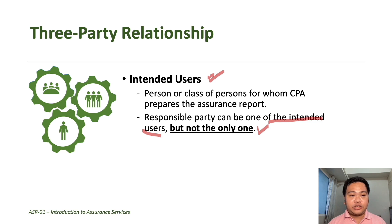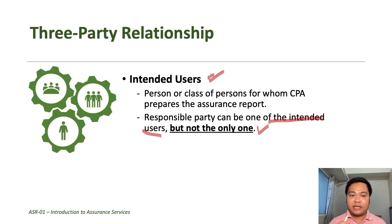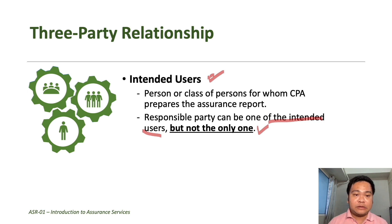If there is a broad range of interested users — as in the audit of financial statements — the intended users may be limited to major stakeholders with significant and common interests. For example, users of financial statements include investors, creditors, employees, the government, and even the general public. In that case, the auditor can limit the address of the report to the significant or major stakeholders.